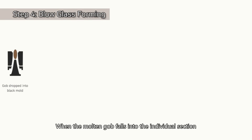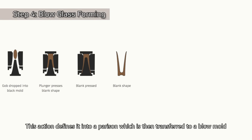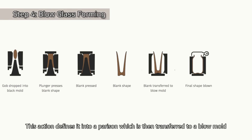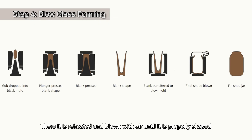For wide-mouth glass containers, glass vases, glass candle jars, or milk bottles, the press and blow process is widely used. When the molten gob falls into the individual section, a plunger pushes it to fit the mold, defining it into a parison. The parison is then transferred to a blow mold, where it is reheated and blown with air until it is properly shaped.